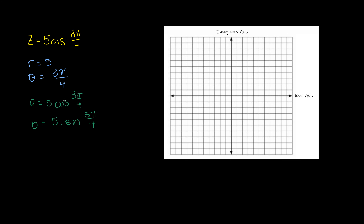Pi/4 in the first quadrant gives square root of two over two. 3π/4 happens to be in the second quadrant — Q2 — where y is positive and x is negative. So cosine is negative. The reference angle is π/4, which gives square root of two over two for both sine and cosine.